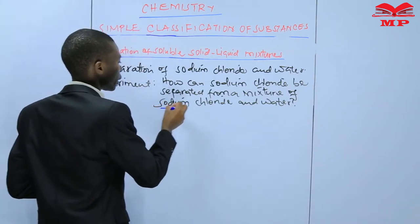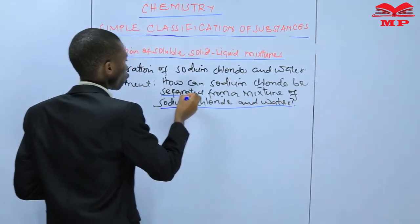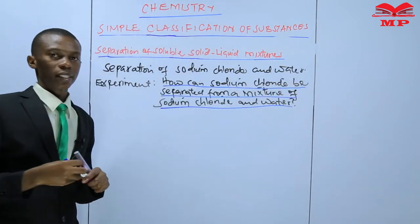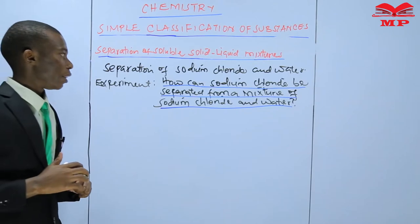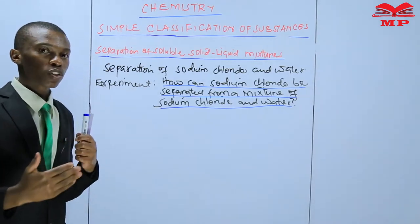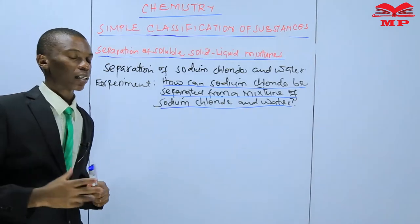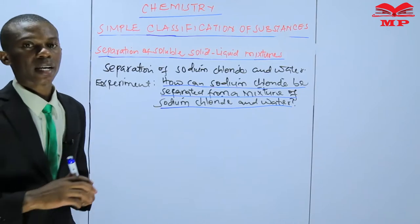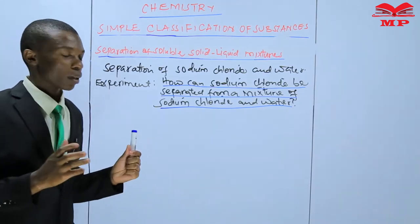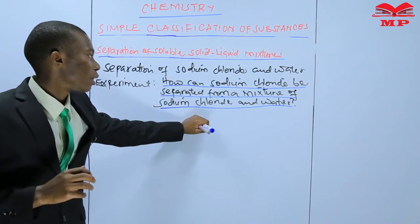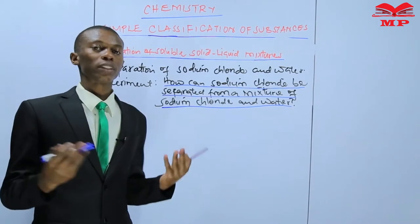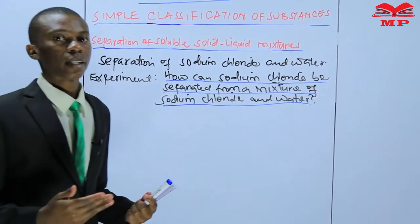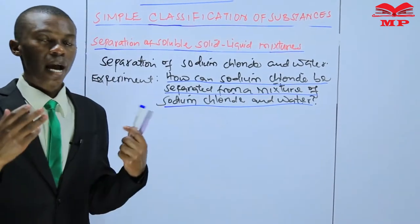Sodium chloride is salt. Therefore, when you add sodium chloride in water and stir, sodium chloride is going to dissolve in water and you will form a solution. In this case, sodium chloride is the solute, water is the solvent, and therefore a mixture of water and sodium chloride is a solution.